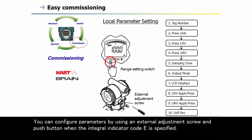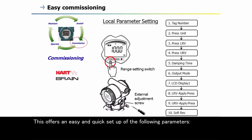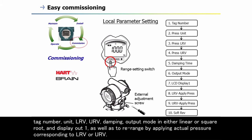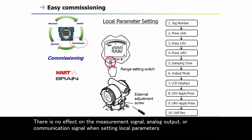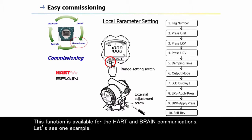You can configure parameters by using an external adjustment screw and push button when the integral indicator code is specified. This offers an easy and quick setup of the following parameters: tag number, unit, LRV, URV, damping, output mode in either linear or square root, and display output one, as well as re-ranging by applying actual pressure corresponding to LRV or URV. There is no effect on the measurement signal, analog output, or communication signal when setting local parameters. This function is available for HART and BRAIN communications.